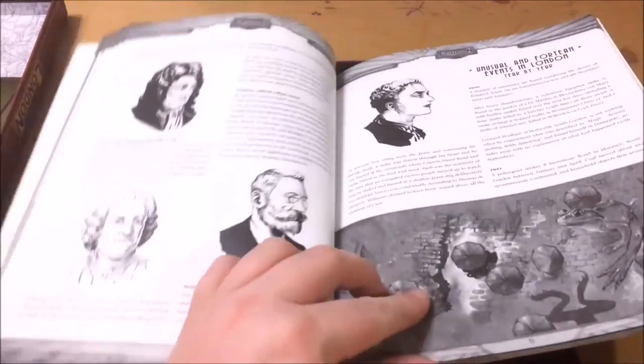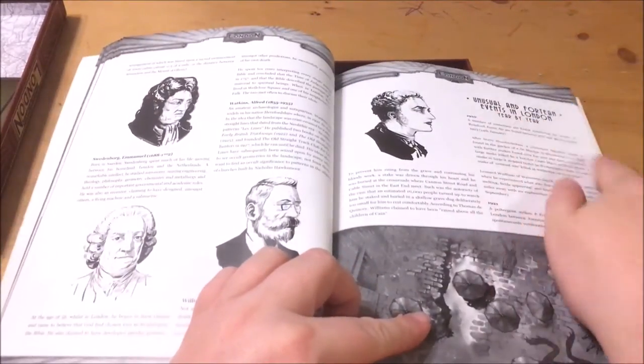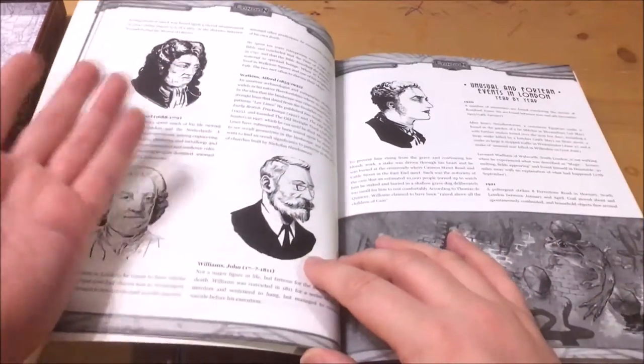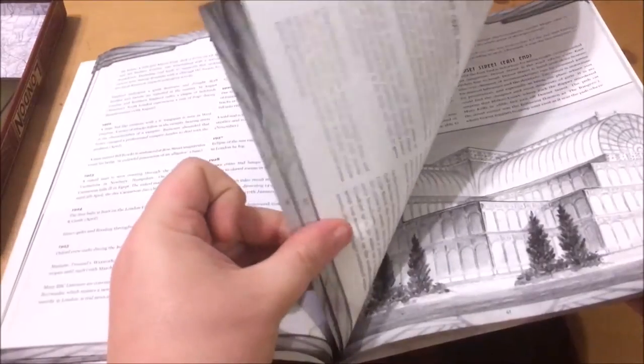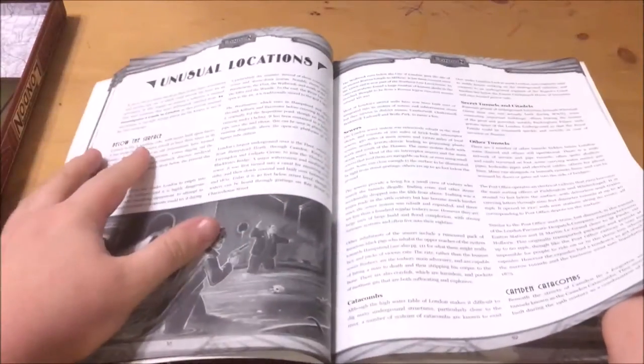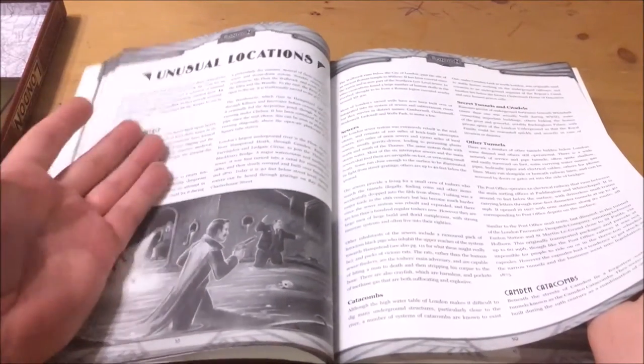We then have unusual and 14 events in London year by year. This details odd circumstances throughout the ages. Next up is unusual locations. This details all the usual places that investigators end up like sewers, catacombs and the like.